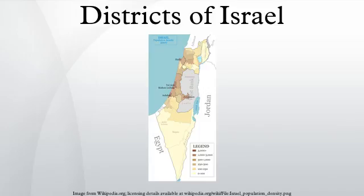Haifa district: sub-districts — Haifa: population 553,400; Hadera: population 398,500.